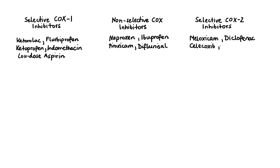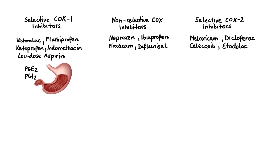This relative selectivity for the COX enzymes explains some of the differences in efficacy and safety of these NSAIDs. The most common adverse effects of NSAIDs occur in the gastrointestinal tract. This is where COX-1-mediated production of prostaglandin E2 (PGE2) and prostacyclin plays an important role in the synthesis of protective mucus as well as regulating normal gastric blood flow. This is why inhibition of COX-1 increases risk for GI bleeding and peptic ulcers, and agents that are more selective for COX-1 are associated with the highest risk.